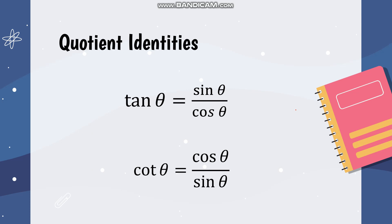These are called identities because whatever theta you use, it will always be true that tangent theta equals sine theta divided by cosine theta. Another quotient identity is cotangent theta, which equals cosine theta over sine theta.